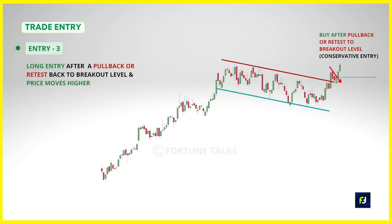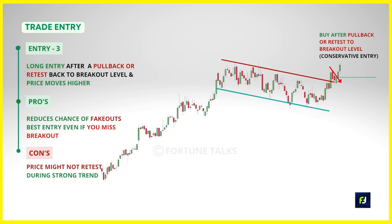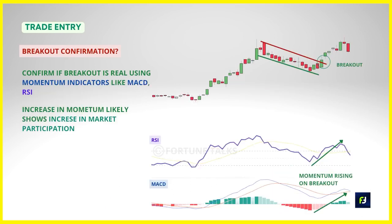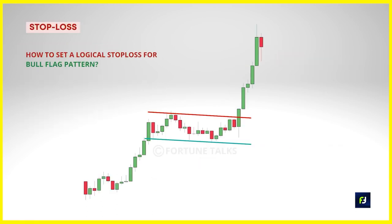Waiting for a pullback or retest may not happen often in a strongly trending market, so you may miss the trade completely. It is up to you to decide your entry strategy and practice it over a large number of trades. It is always recommended to confirm the validity of a breakout using volumes and other indicators — higher than average volume can validate a breakout as it shows market participants' interest. Low volume breakouts are most likely to fail. Using momentum indicators like MACD and RSI can also help identify a true breakout.